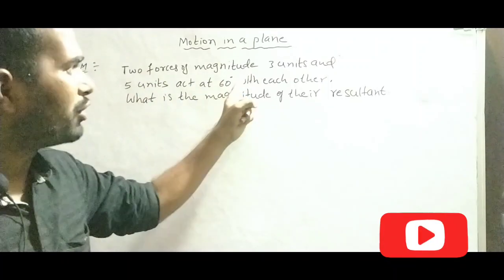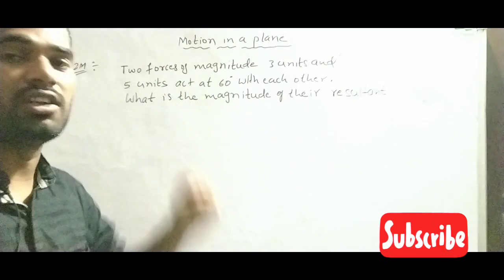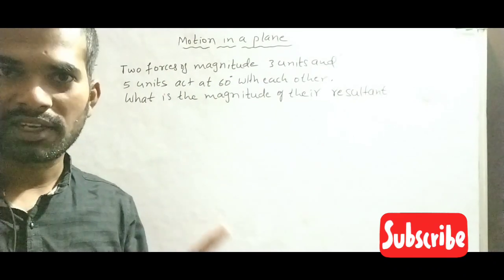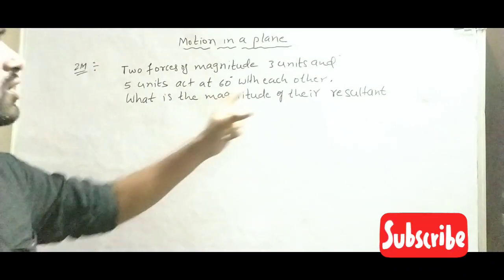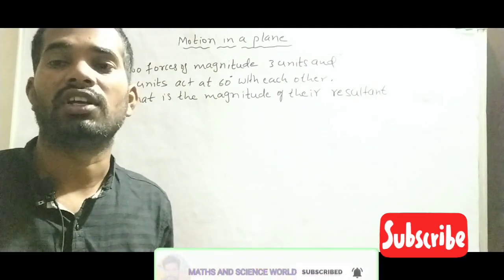Two forces of magnitude 3 units and 5 units act at 60 degrees. Two vectors are acting at 60 degrees with each other. What is the magnitude of their resultant vector?